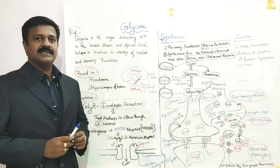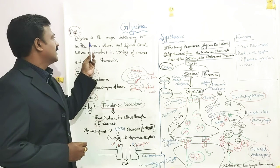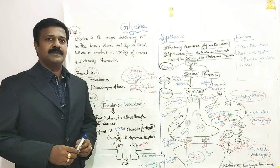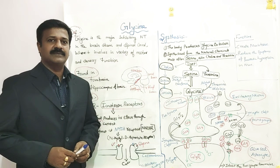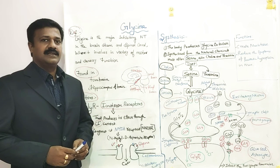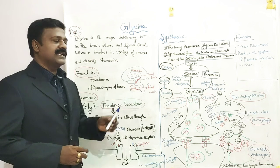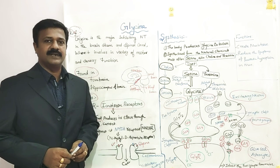First of all, what is Glycine? Glycine is the major inhibitory neurotransmitter. They are present in the brain stem and spinal cord. That involves in a variety of motor and sensory functions.